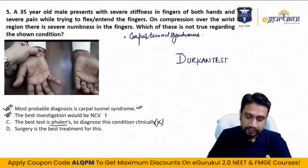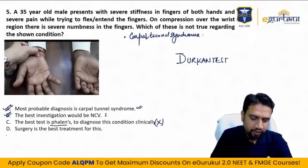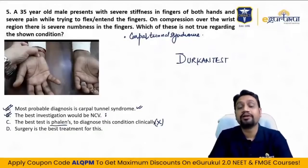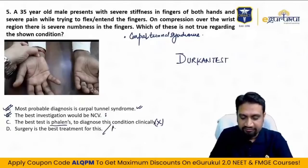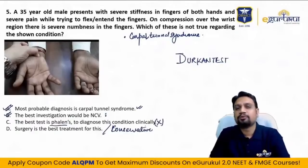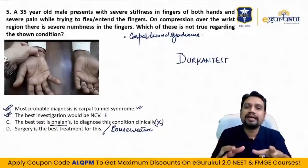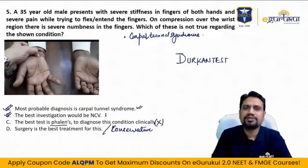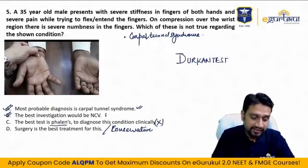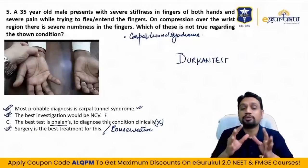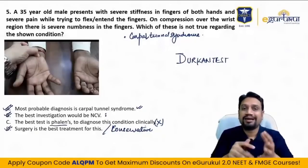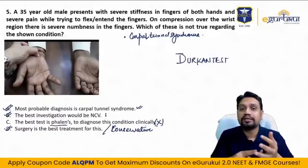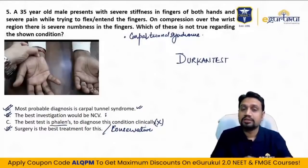Surgery is not always the best treatment — majority of patients can improve with conservative management. For this particular patient with severe restriction of movement, release of the transverse carpal ligament (flexor retinaculum) will be needed. Conditions related to carpal tunnel syndrome include pregnancy, diabetes, thyroid disorders, and rheumatoid arthritis.